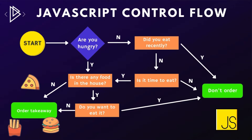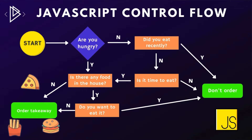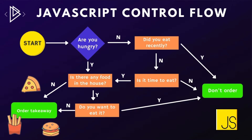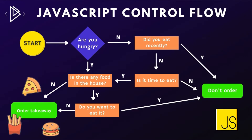For this example we've got two paths: order takeaway or don't order, and hopefully this is going to help us decide whether we need to order takeaway or not. We start with the question: are you hungry? This has two possible answers — yes or no. Let's go for no. So the next question is: did you eat recently? Let's say yes, and in that case the conclusion is don't order.